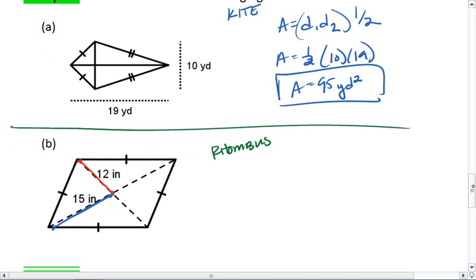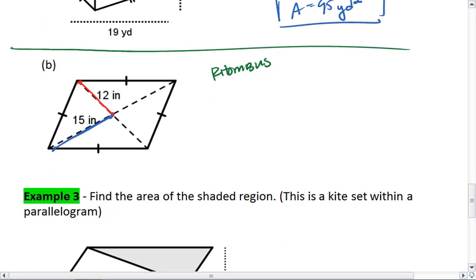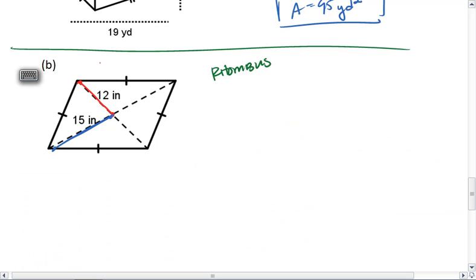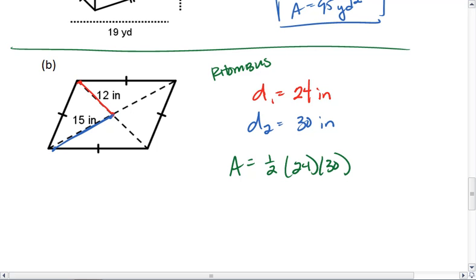For the rhombus, my diagonals, I'm actually only given half of them. The full diagonal, D1, is going to be 24 inches, and the full diagonal of D2 is 30 inches. Thus, the area of my rhombus is 1 half of D1 times D2. So, 1 half of 24 times 30. I get 360 inches squared.